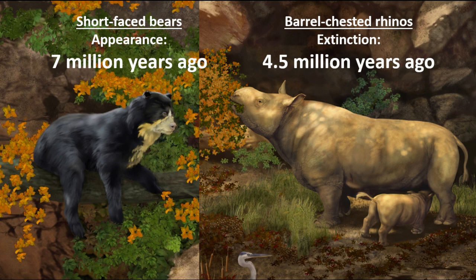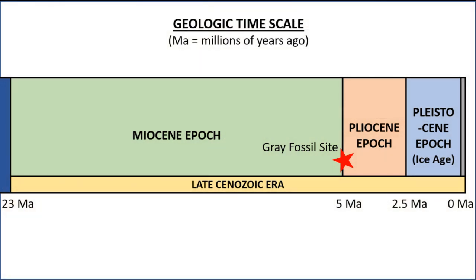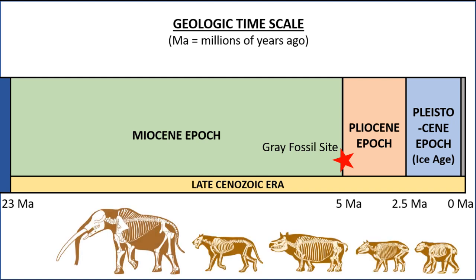This age range puts us near the transition between the Miocene and Pliocene epochs. This is long after the end of the age of dinosaurs, so we don't expect to find animals like T. rex and Triceratops among the Gray site fossils, and it's a few million years before the start of the ice age, so we also don't see woolly mammoths or ancient humans at Gray. At that time, the world looked pretty much like it does today, although the Earth's climate was a bit warmer and North America was home to lots of plants and animals that don't live here anymore, like those rhinos and short-faced bears.